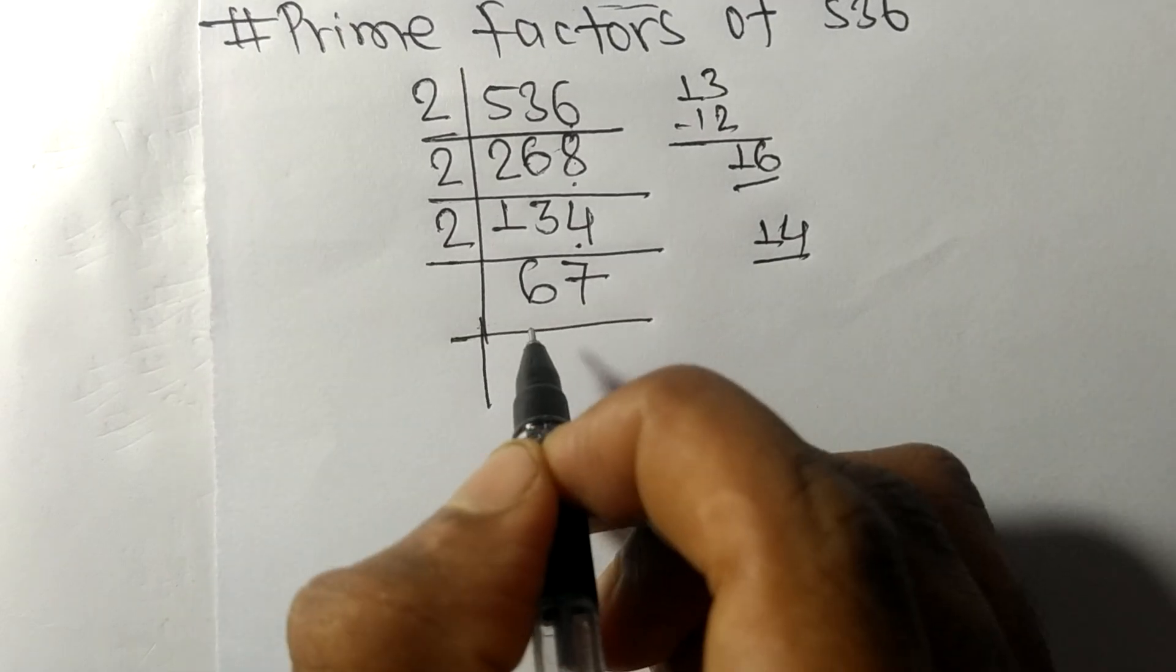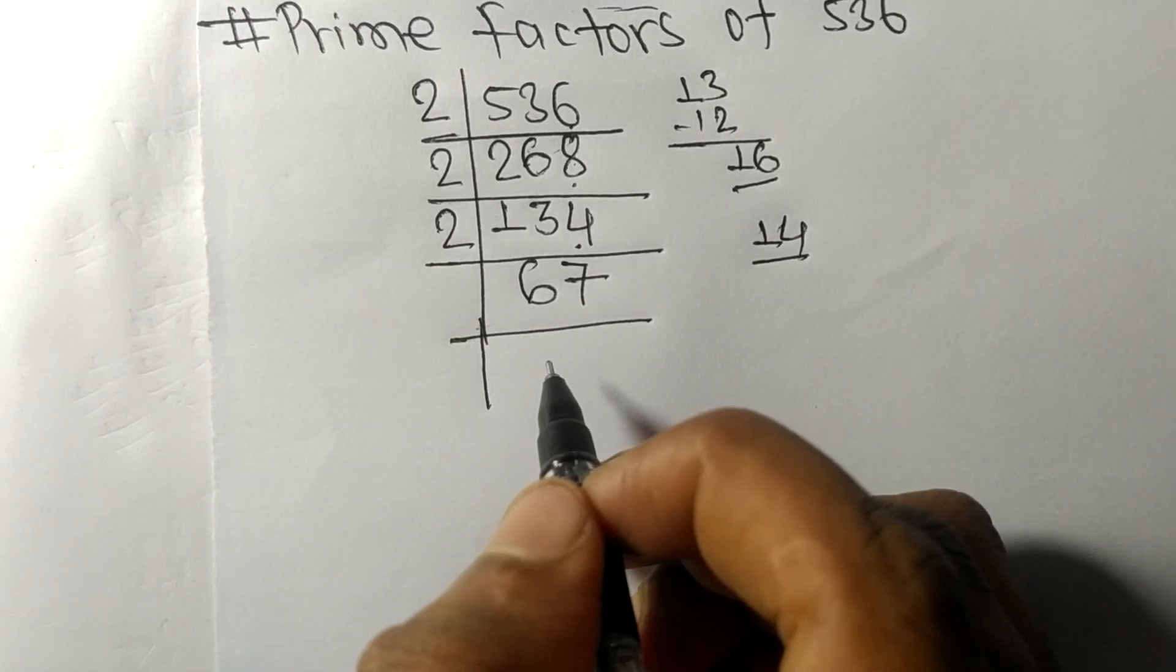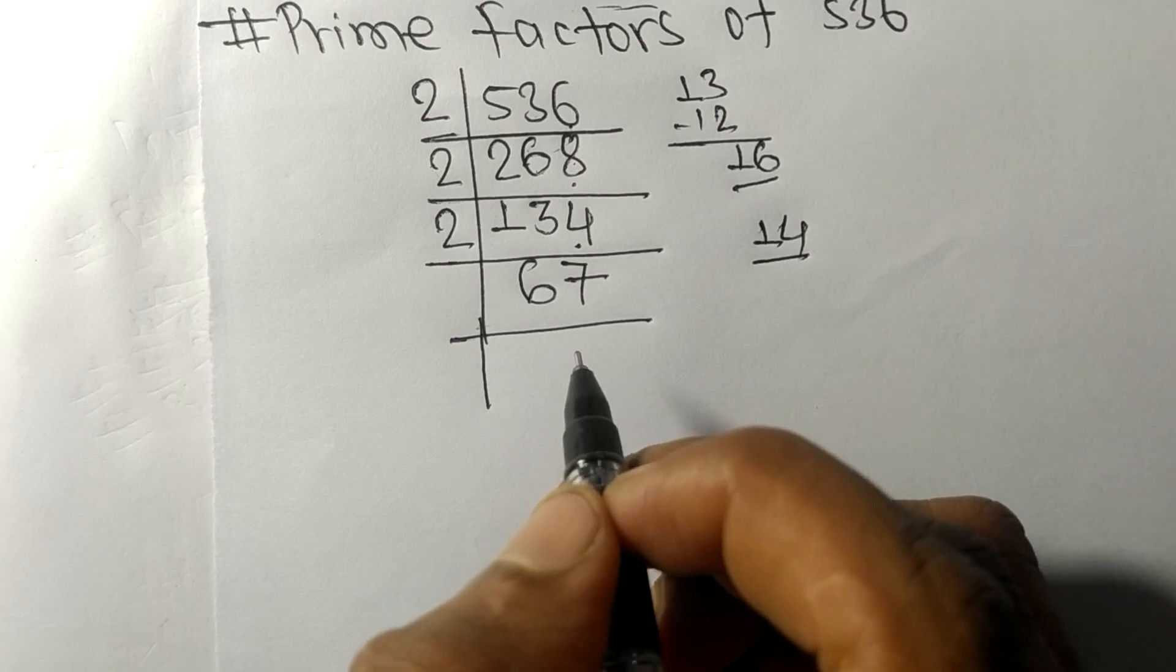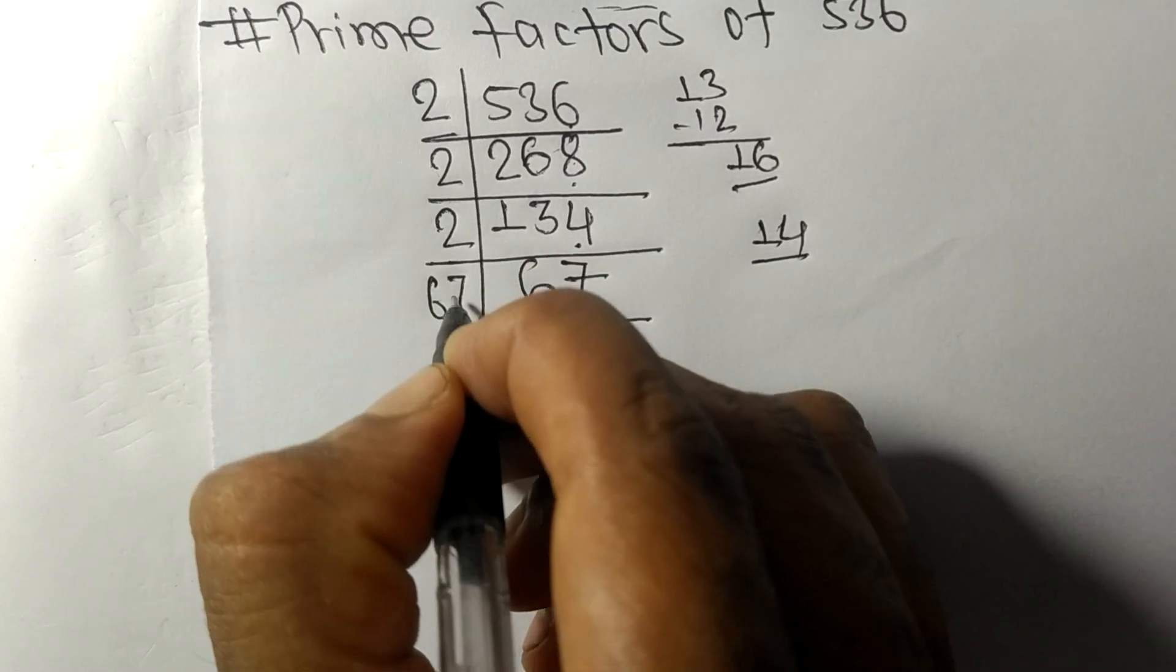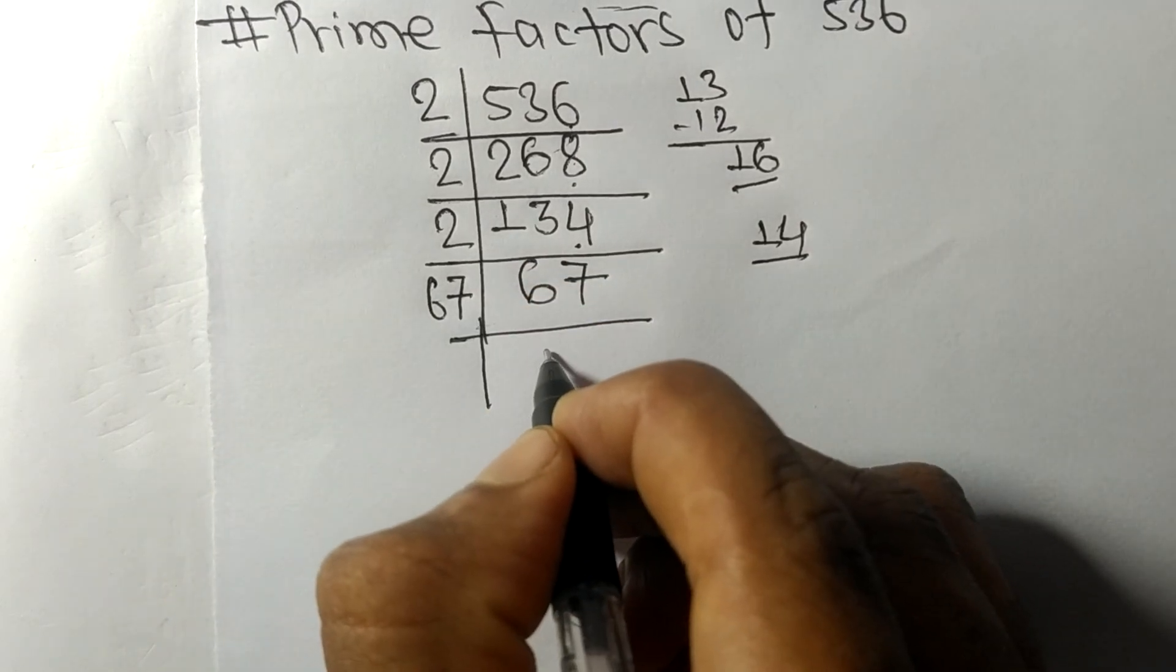Now we got here 67, which is our prime number, so it is divisible by 67 itself and we get here 1.